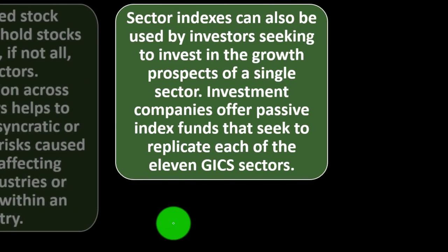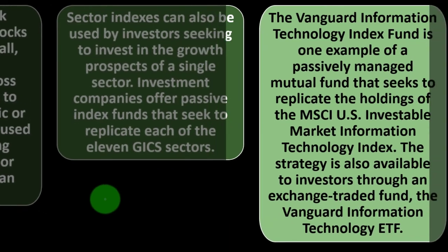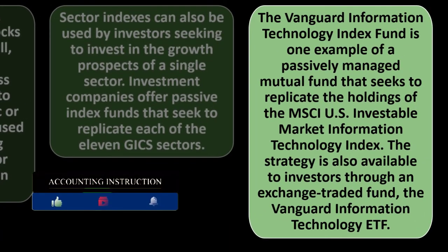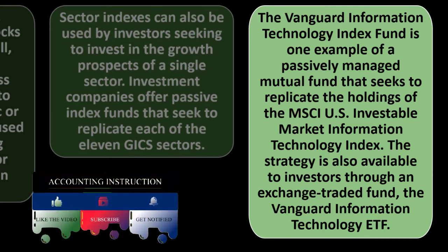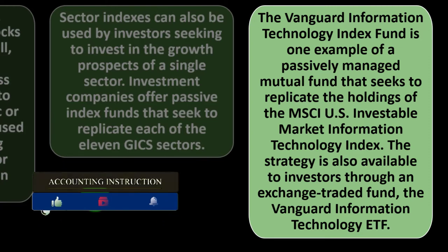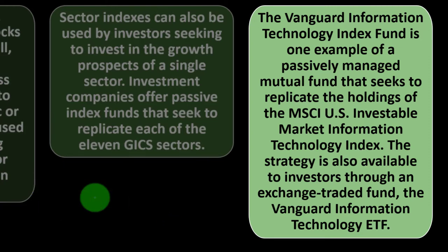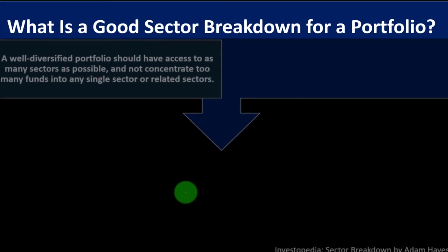Sector indexes can also be used by investors seeking to invest in the growth prospects of a single sector. Investment companies offer passive index funds that seek to replicate each of the 11 GICS sectors. For example, the Vanguard Information Technology Index Fund is a passively managed mutual fund that seeks to replicate the holdings of the MSCI US Investable Market Information Technology Index. This strategy is also available through the Vanguard Information Technology ETF.